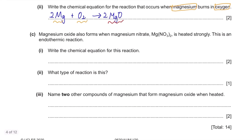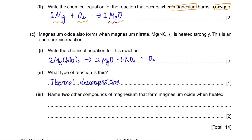Part c. Magnesium oxide also forms when magnesium nitrate, Mg(NO₃)₂, is heated strongly — this is an endothermic reaction. The products of thermal decomposition of a nitrate compound are an oxide, NO₂, and oxygen. The type of reaction is thermal decomposition. Two other magnesium compounds that form magnesium oxide when heated are magnesium carbonate and magnesium hydroxide.